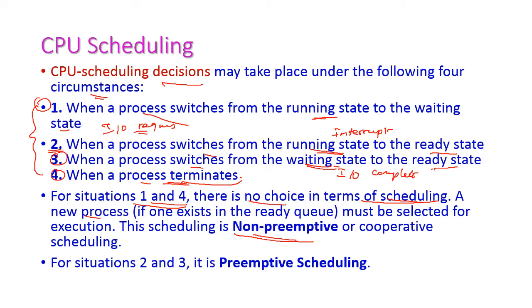In situations two and three — when the process switches from running state to ready state due to an interrupt, and when a process moves from waiting state to ready state — these are called preemptive scheduling. We will see both of these in detail in the forthcoming slides.